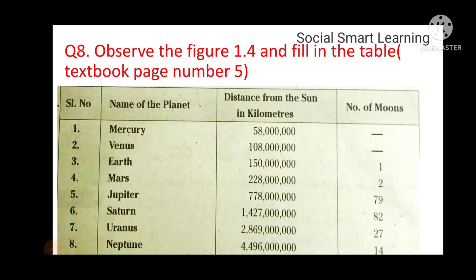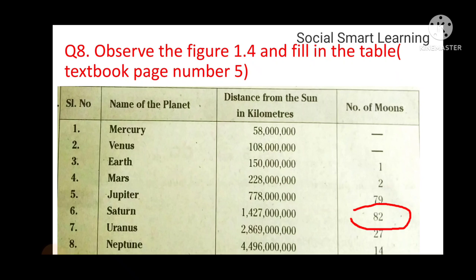Eighth question: Children, observe the table and fill in your notebook. The table gives the name of the planet, distance from the sun in kilometers, and number of moons. Mercury has no moons, Venus has no moons, Earth has only one moon, Jupiter has 79 moons, Saturn has 82, Uranus has 27, and Neptune has 14. Saturn has the highest number of moons.